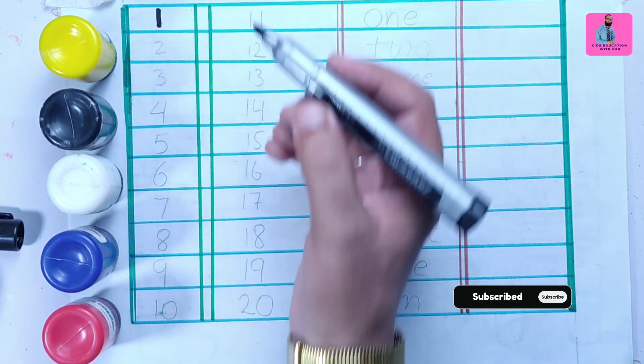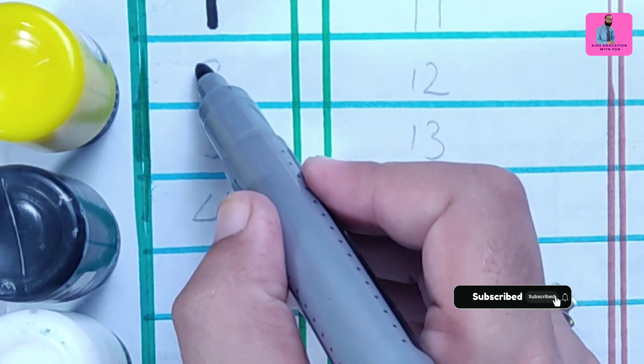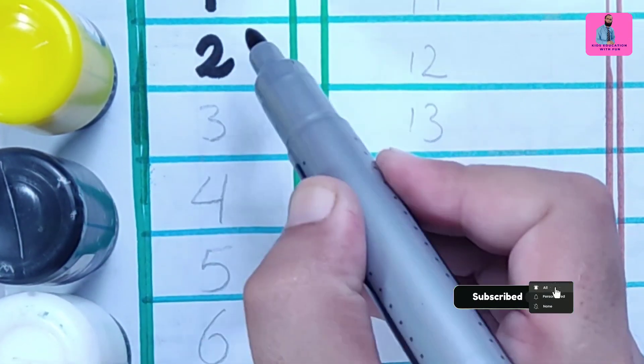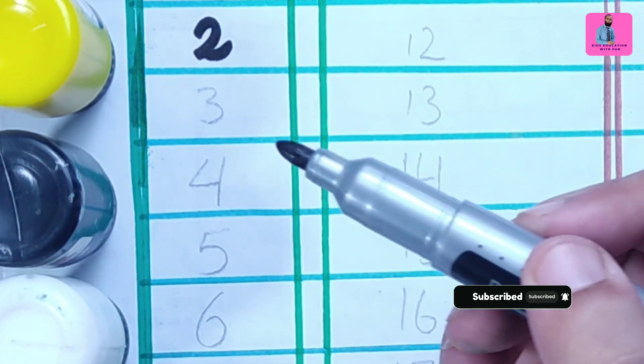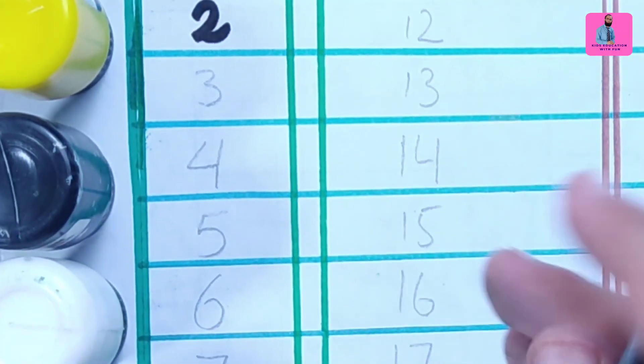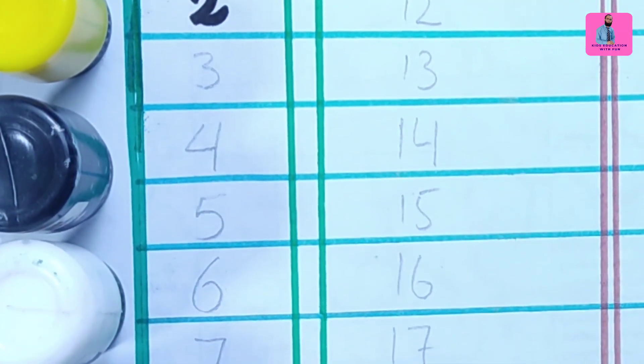This is number one, two. Dear kids, do the same practice. You should have a paper and a blank marker or pencil.